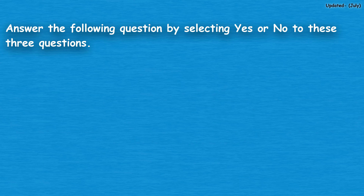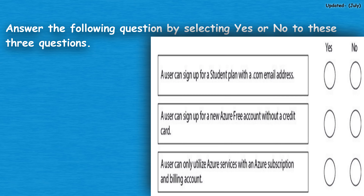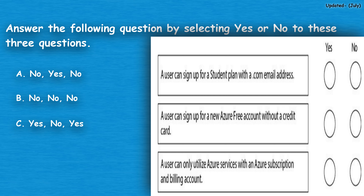The next question: answer the following by selecting yes or no to these three questions. Option A: no, yes, no. Option B: no, no, no. Option C: yes, no, yes. Option D: no, no, yes.